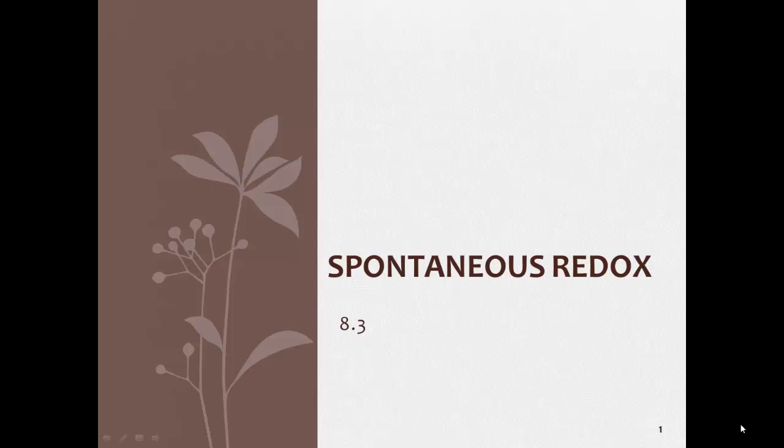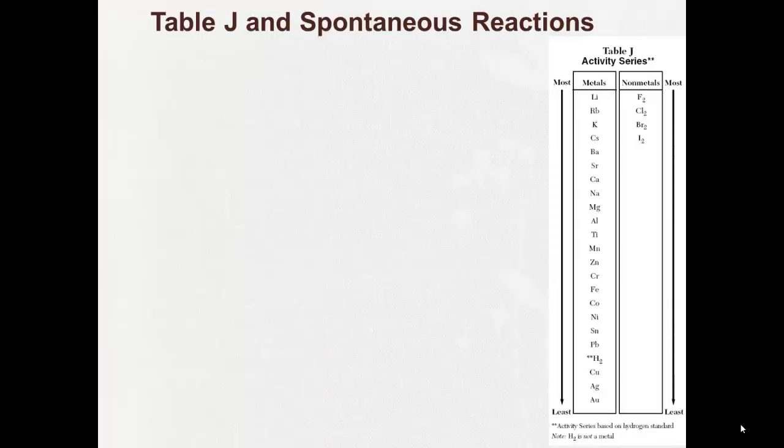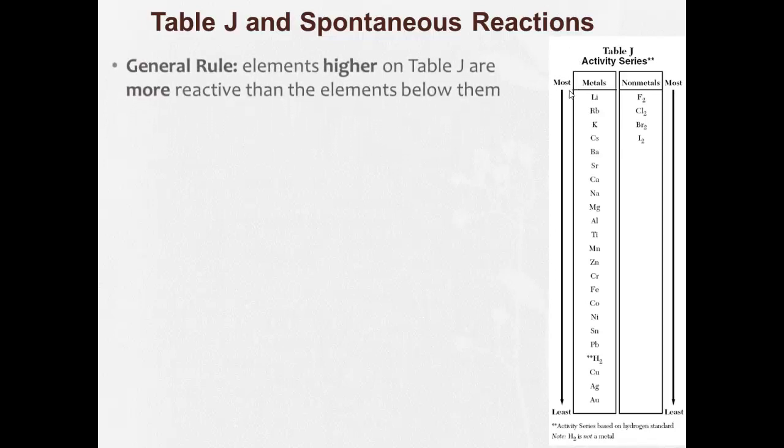Here we go with our video 8.3 Spontaneous Redox. Here we're going to learn how to determine if redox reactions will occur spontaneously. And to do so, we're going to use Table J, which we've done earlier this year.